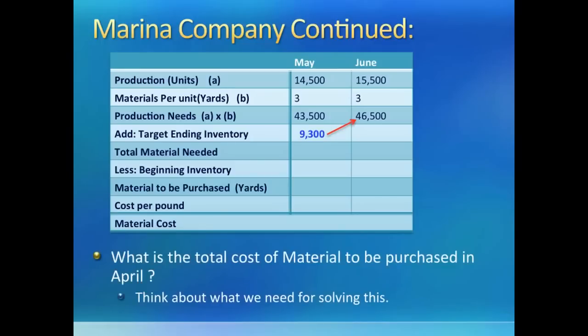Now let's look at the next problem for Marina. This time we need to figure out the April raw material cost. Think about the steps for the direct material budget: we need production units for April, desired inventory, and the cost of raw material per unit.